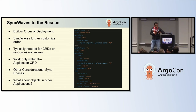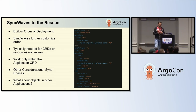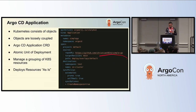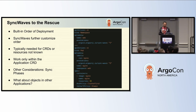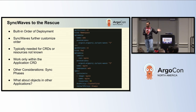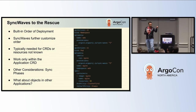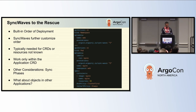SyncWaves are only scoped to the specific application you're deploying. So within a specific Argo CD application, all the sync waves are scoped from within that application — there's no way to say 'wait for the resource in another application.' Beyond the scope of this talk, there's also such a thing as sync phases: pre-sync, sync, and post-sync. SyncWaves are scoped to those individual phases.